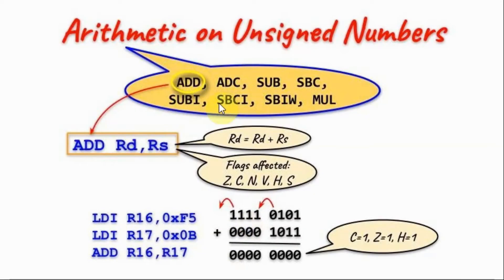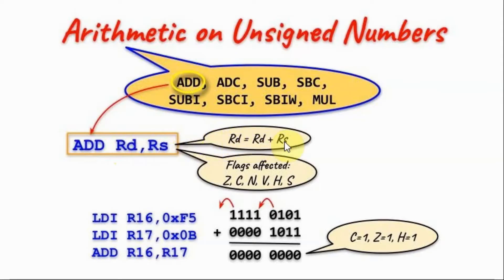Here we have some opcodes related to arithmetic instructions on unsigned numbers. We start with the ADD instruction — this is the syntax. In the operand, the content of the source register is added to the content of the destination register, and the result goes into the destination register. These are the affected flags.